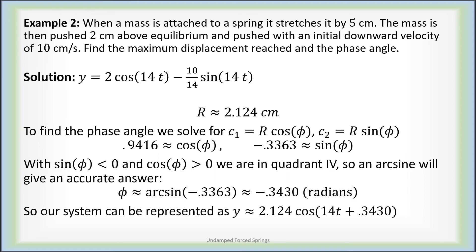Therefore we can represent our system as R cos(omega naught t − φ), with R ≈ 2.124 and φ ≈ −0.3430. Since the phase angle phi was negative, the minus phi becomes plus 0.3430. So our solution as a single sinusoidal function is approximately 2.124 cos(14t + 0.3430).